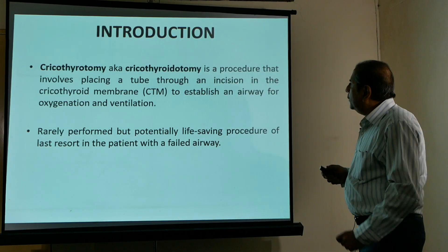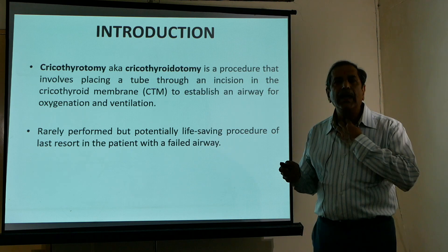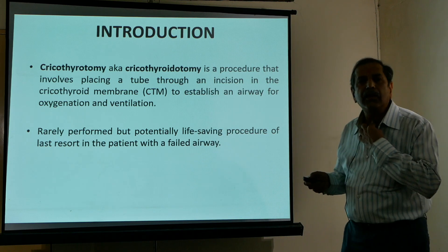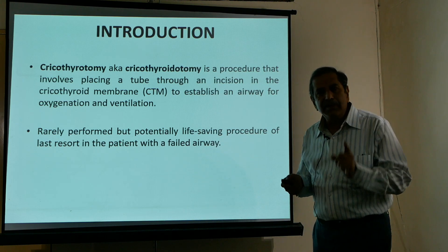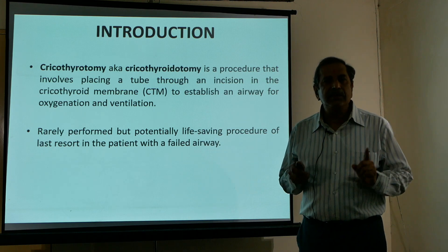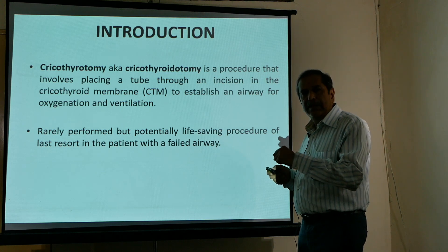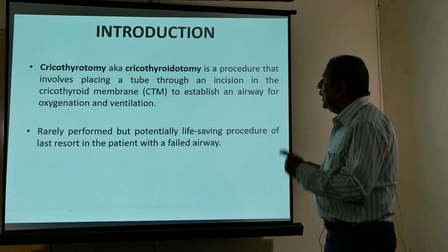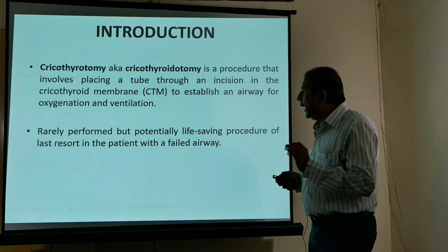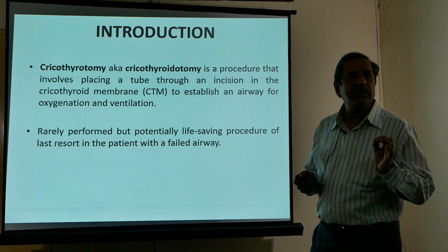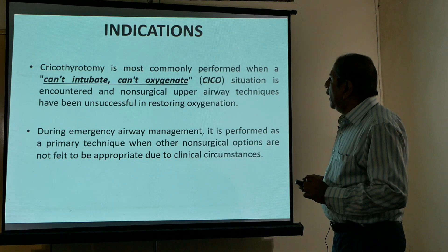Cricothyroidotomy can be defined as a procedure that involves passing a tube through an incision made in the cricothyroid membrane. This is meant to establish an emergency airway for oxygenation and ventilation. It is only rarely performed but is a potentially life-saving procedure.